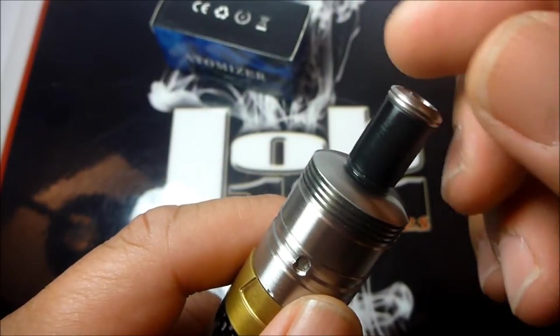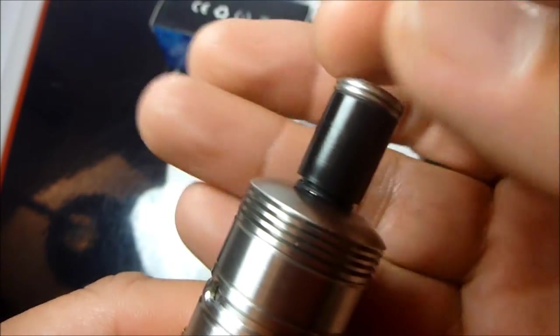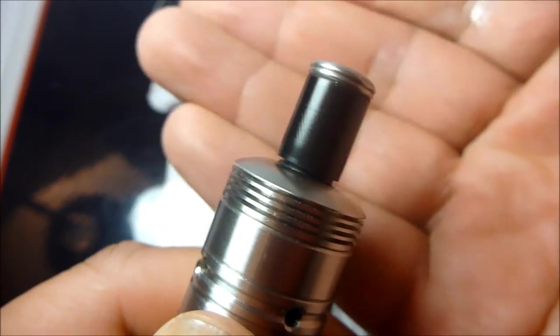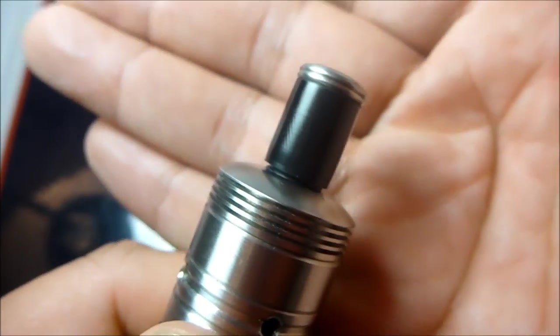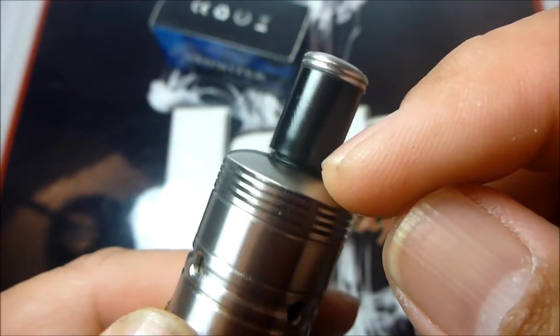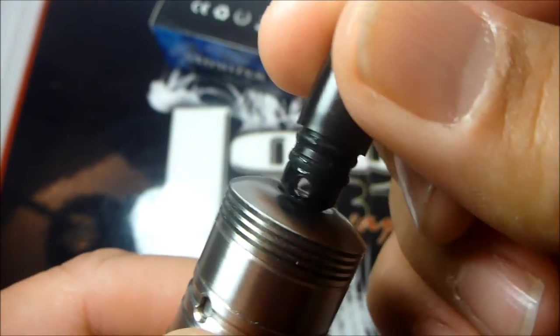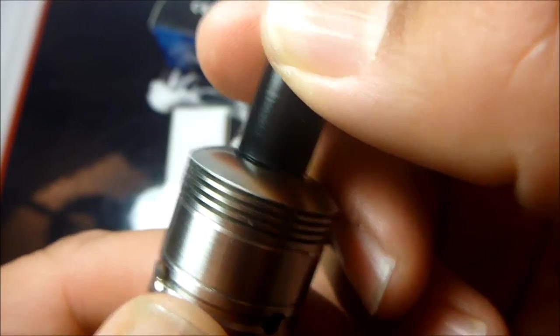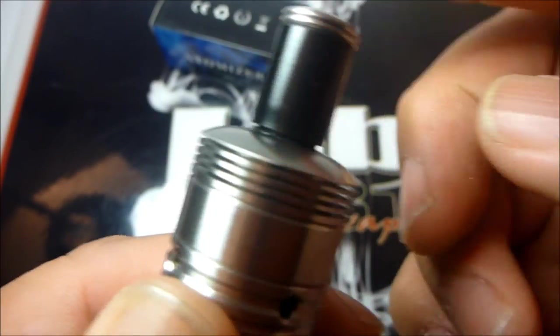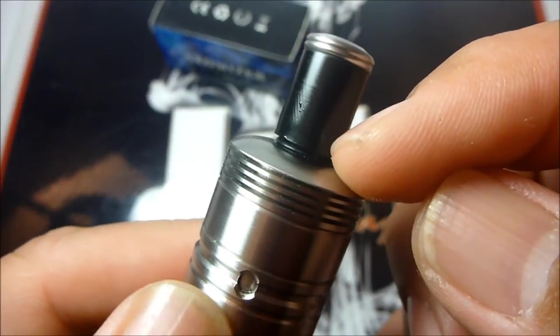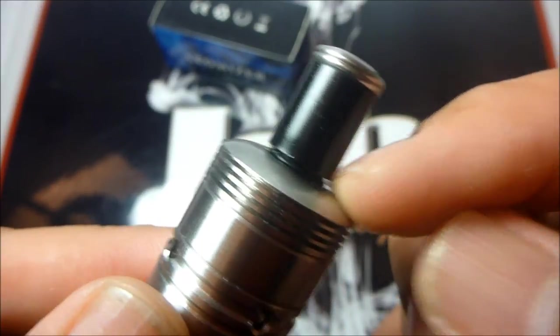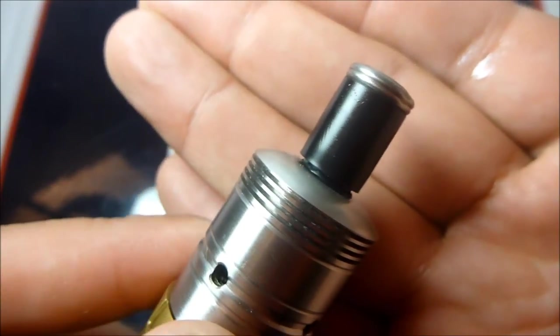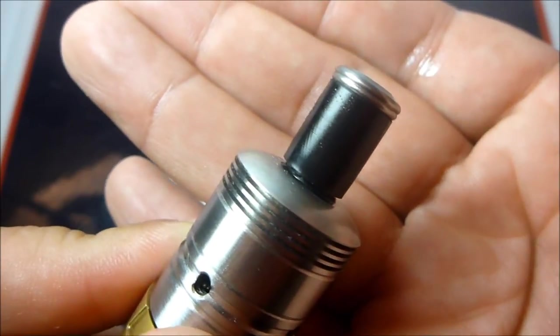One thing I forgot to mention that's a negative about this as well, you can see the drip tip, even though I push it all the way in, it always seems to pop out. You see that little gap? I mean there's a double o-ring here and I keep pushing it back in but then it still kind of pops out so it doesn't sit completely flush. That's just something to take note of.